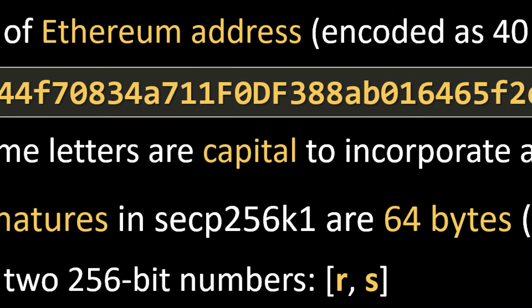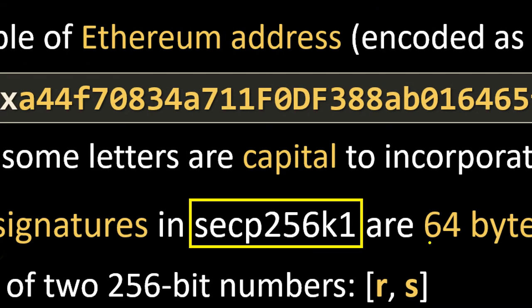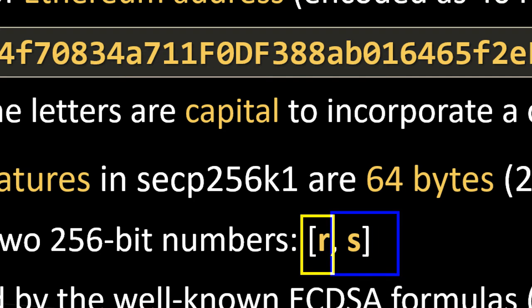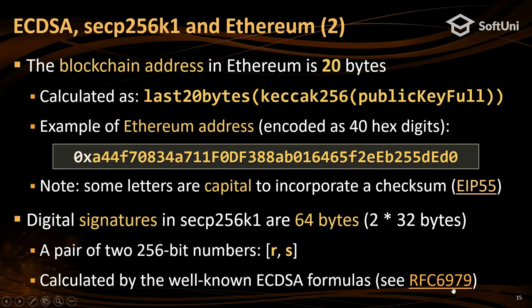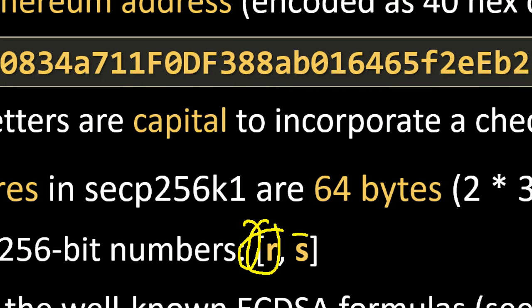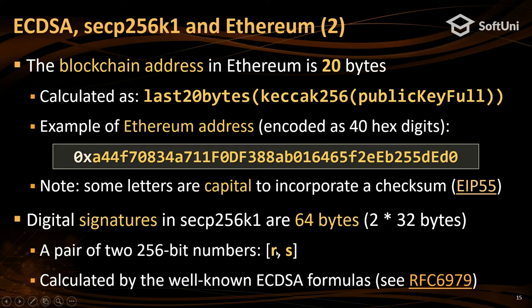Digital signatures in the SECP256K1 cryptosystem consist of 64 bytes — a pair of numbers R and S. The number R should be random, and there are many cryptographic attacks that try to predict it. There were successfully stolen Bitcoins due to failures of Android's random generator. The RFC 6979 standard explains how to generate R deterministically to create signatures in a way that makes faking the signature no easier than trying all possible private keys.